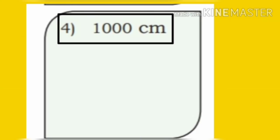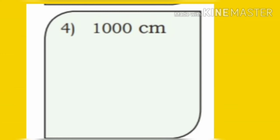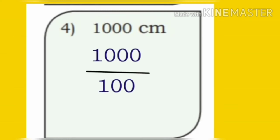Now, fourth one: 1000 centimeter. Let us divide 1000 by 100. Cancel the zeros on numerator and denominator. We get the answer as 10 meter.